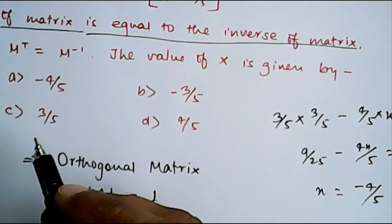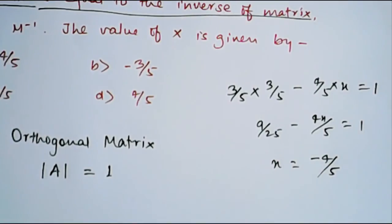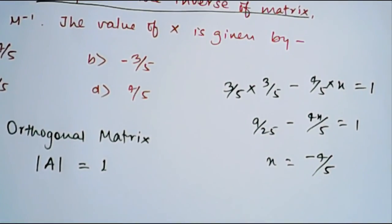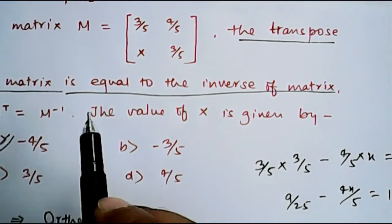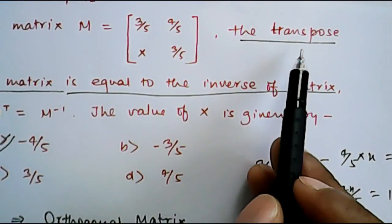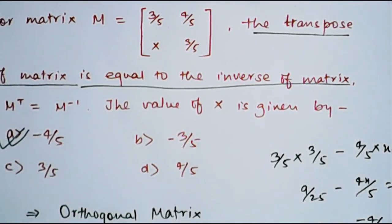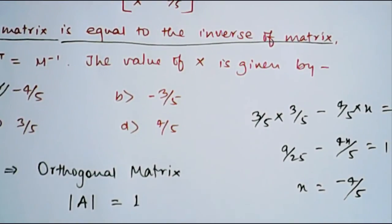So the option A is the correct option. So simply by remembering the property you can solve the problem very easily and save your time. This was simple property of orthogonal matrix and we know for orthogonal matrix determinant is equal to 1. So using this property we can easily solve this problem and find out the answer.